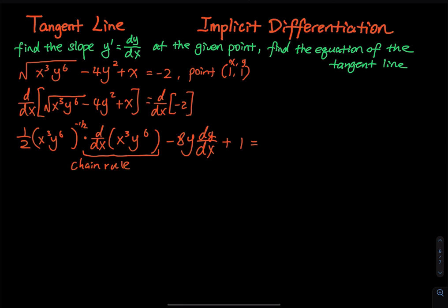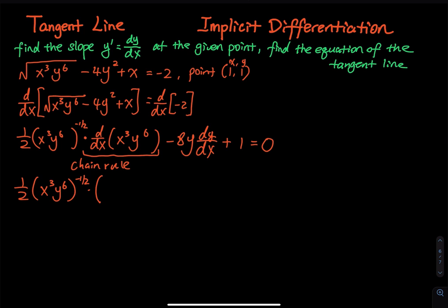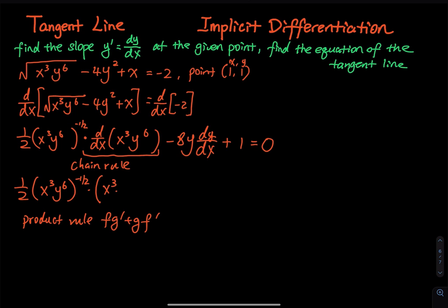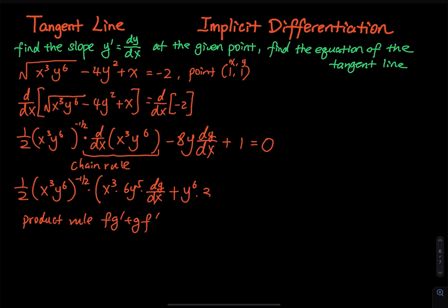On the other side of the equal sign, the derivative of negative two is zero. Now we still have to handle the chain rule on the square root term. We have one-half times (x³y⁶)^(−1/2), and the derivative of the inside x³y⁶ requires the product rule: fg′ + gf′. So we copy f = x³ and take the derivative of y⁶, giving 6y⁵, followed by dy/dx. Then plus y⁶ times the derivative of x³, which is 3x².